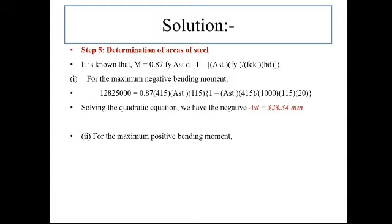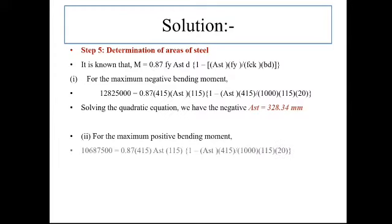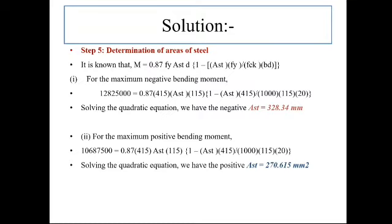Next, let's find the reinforcement for the maximum positive bending moment at the middle of the span. For this case, the value of moment is 10.6875 × 10⁶ N·mm, giving 10.6875 × 10⁶ = 0.87 Fy into AST into 115 (effective depth), in bracket 1 minus AST into 415 divided by 1000 into 115 into 20. Solving this gives maximum positive reinforcement at mid-span as AST = 270.615 mm².